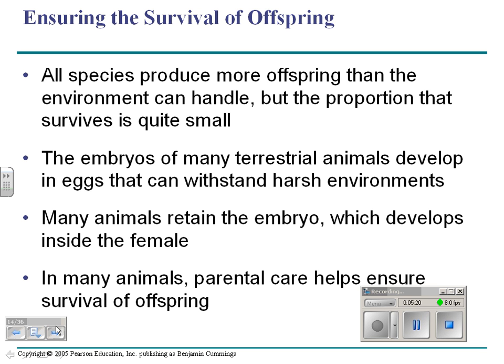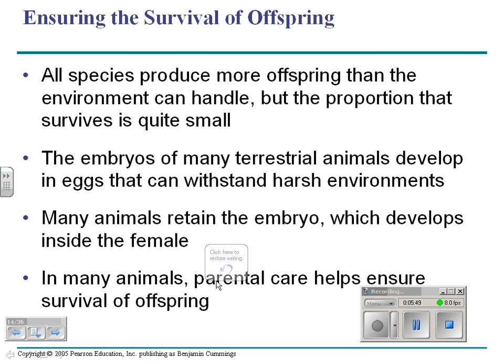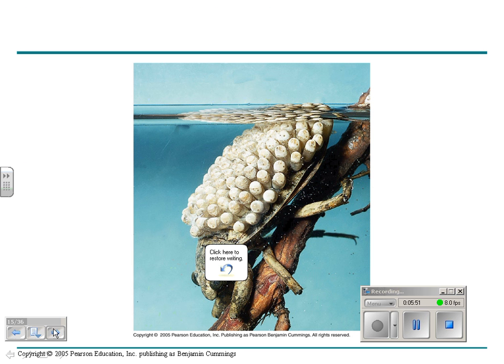Some organisms that reproduce sexually — this slide talks about the fact that all species produce more offspring than who's going to survive. Many terrestrial animals have developed eggs because eggs can withstand harsh environments. Some animals retain the embryo inside the female. Those are two different adaptations to ensure survival of the offspring. Some animals also have parental care — for example, this predacious diving beetle has all the eggs on its back, so the female is taking care of the eggs.